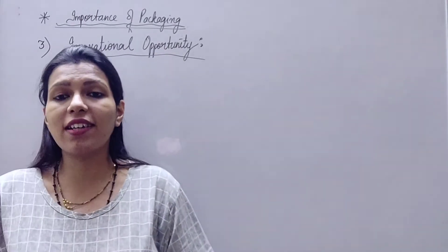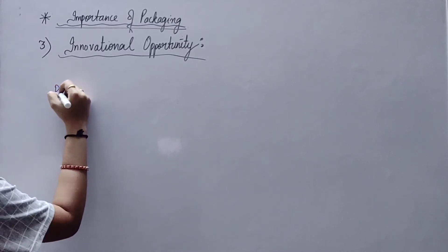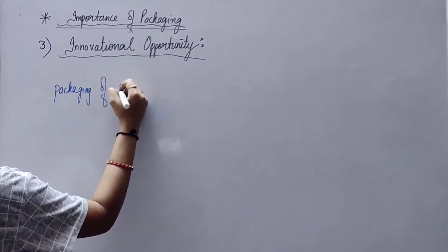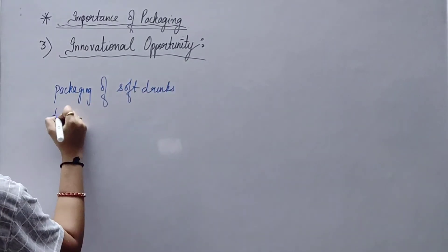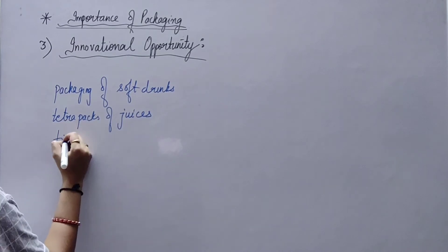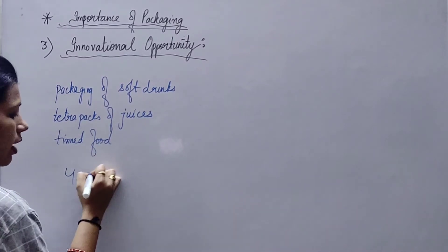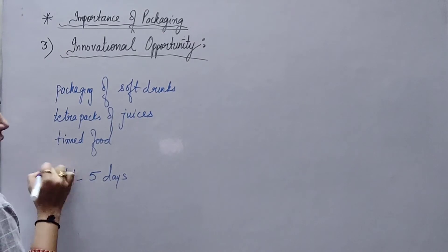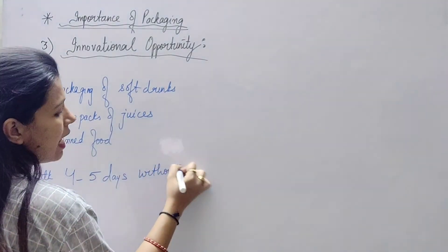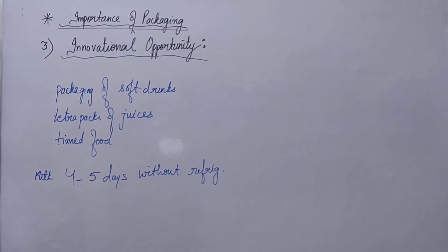For example, milk can now be kept for 4-5 days without refrigeration — that is innovation in packaging. Perishable products that would normally last only a day can now be preserved much longer. Please mention examples in your answers: packaging of soft drinks, tetra packs of juices, and tinned food in which perishable products can be stored for more than 10-15 days. This is an NCERT example.